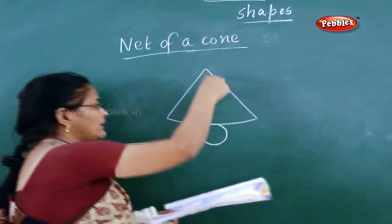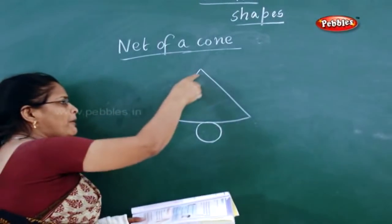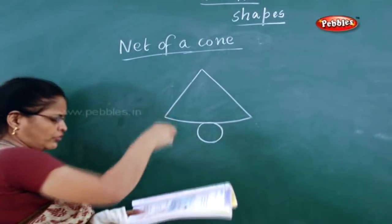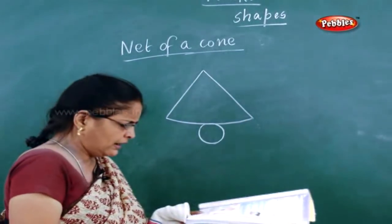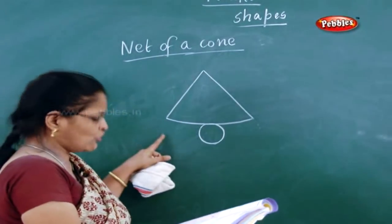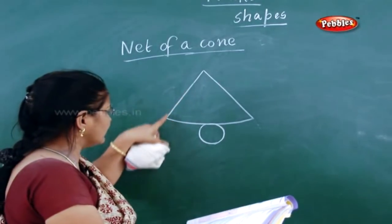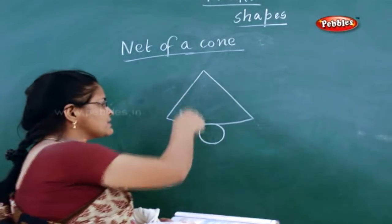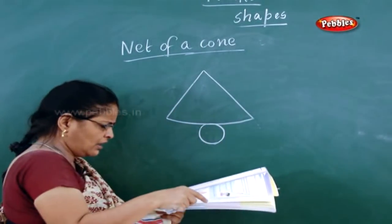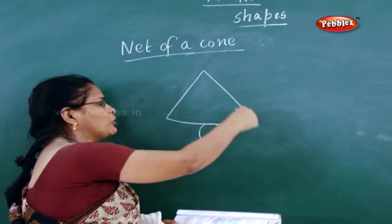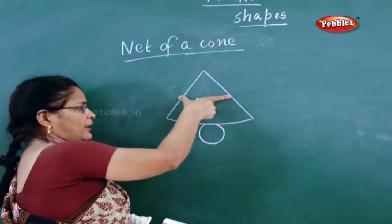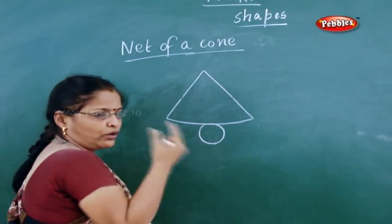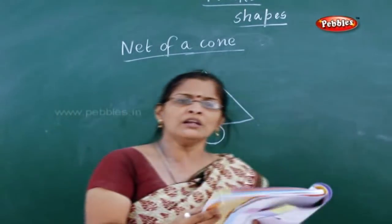So what did you understand from this? The length forms the boundary of the circle, so both of them are equal in length. The length of the arc forms the boundary of the circle and both of them are equal in length. Only then you can form a conical shape.